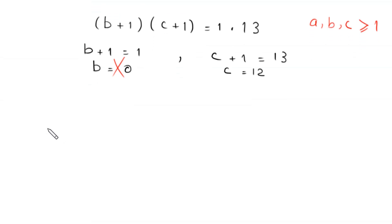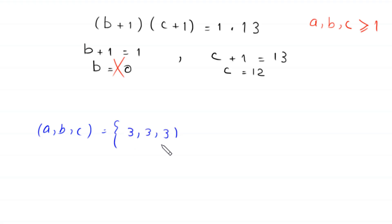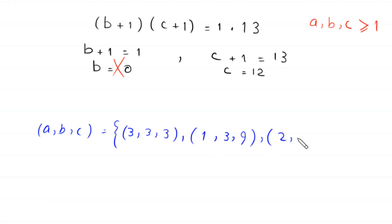Finally, we get three solutions for a, b, c. The first is (3, 3, 3), the second is (1, 3, 9), and the third is (2, 2, 8). These can also be extended to all permutations of these three solutions.